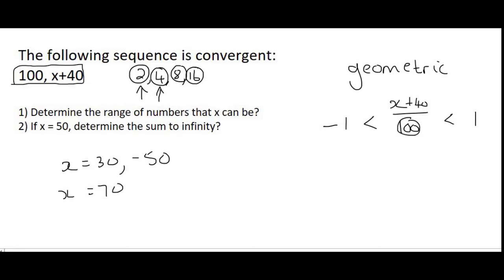So we times the 100 on the left side and on the right side. So we end up with negative 100 smaller than x plus 40 smaller than 100.